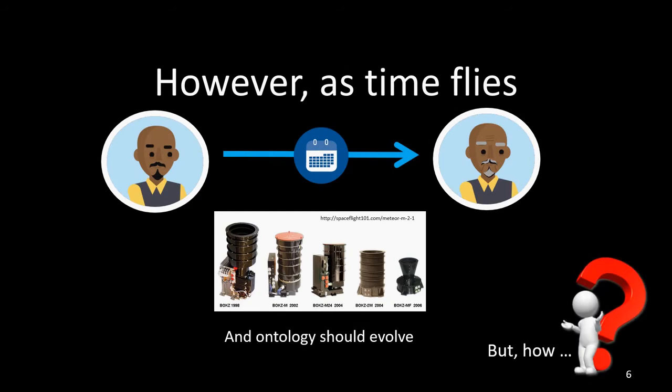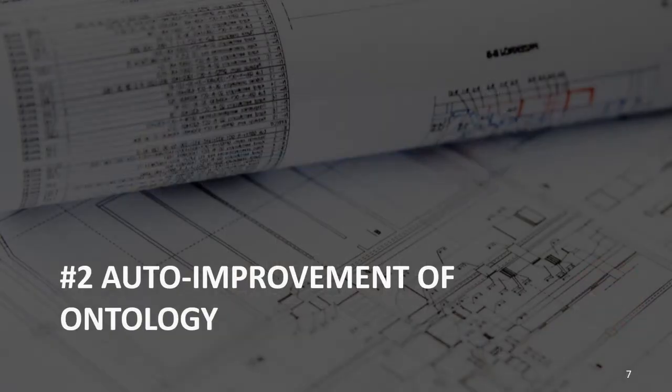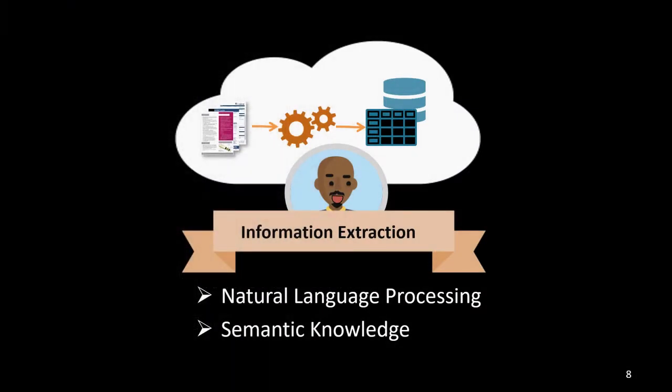However, technology changes very rapidly. There are new generations of spacecraft parts released every year, so the created ontologies should get updated as well. Thus, we need an automatic process for improving the ontology. Because the major source of data is provided in datasheet format, we can use NLP to extract information from them — not only for populating the database, but also for collecting semantic knowledge.